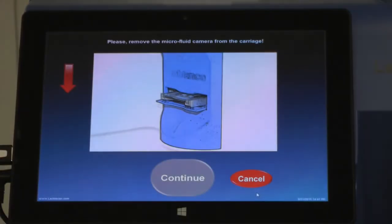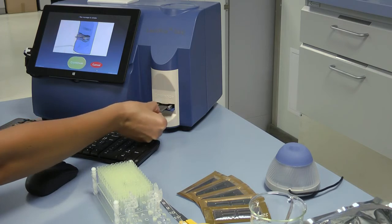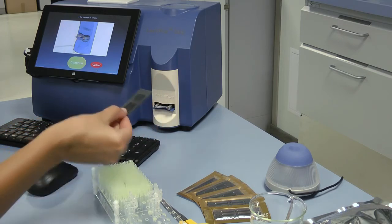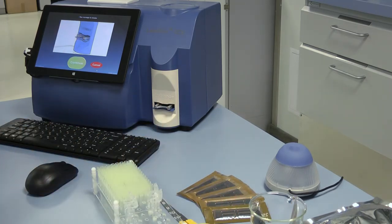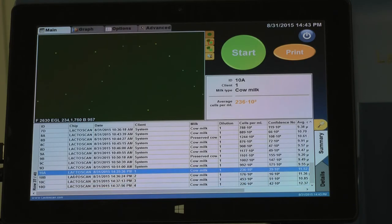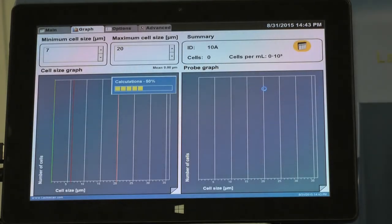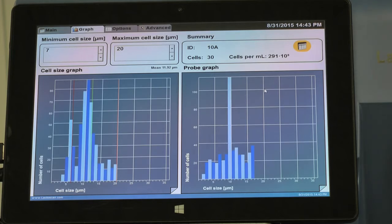A message is shown to remove the microfluidic camera from the carriage. Take the LactoChip out. To proceed back to the main screen, press Continue. Choose Display Graph from the screen options in order to see the test results on a graphical image.